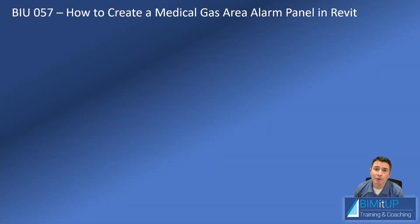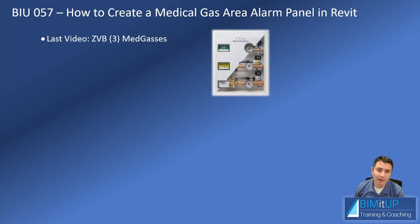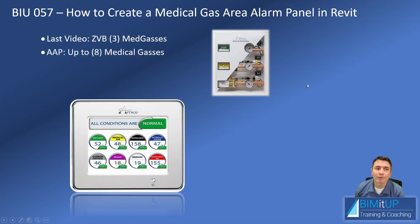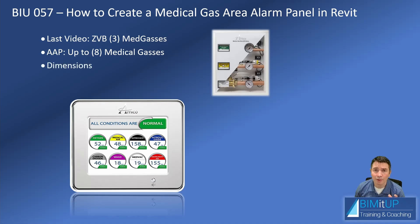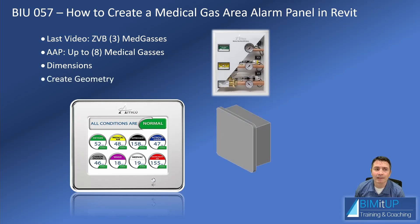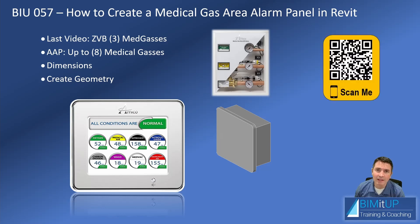Hi everyone, today I'm going to show you how to create a medical gas alarm panel in Revit. Last time we saw how to create a medical gas zone valve box using this example from Amico with three medical gases. In this video I'm going to show you how to create an alarm panel that will be monitoring that zone valve box. This alarm panel can be used from one medical gas all the way up to eight medical gases. We're going to go into the spec sheet, grab the dimensions, plan our family, and then I'll show you how to create the geometry. If you'd rather just download the family, you can contact me using that QR code on screen.